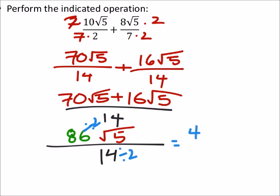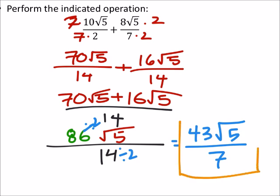So that's 43 times the square root of 5, all over 7. Well 7 doesn't go into 43, and 7 is prime. So this is our final answer here.